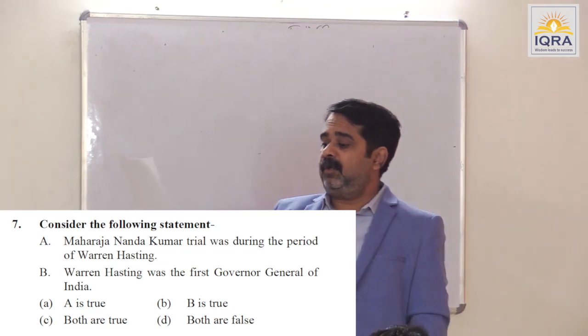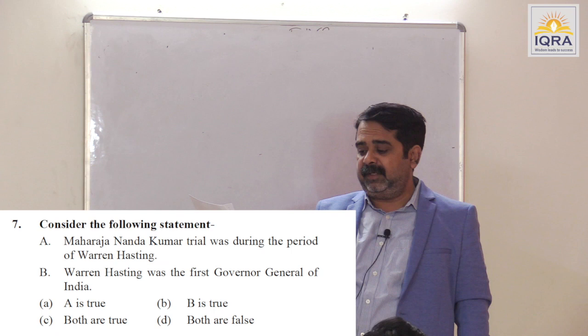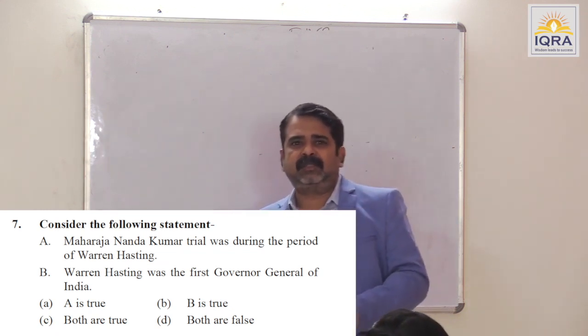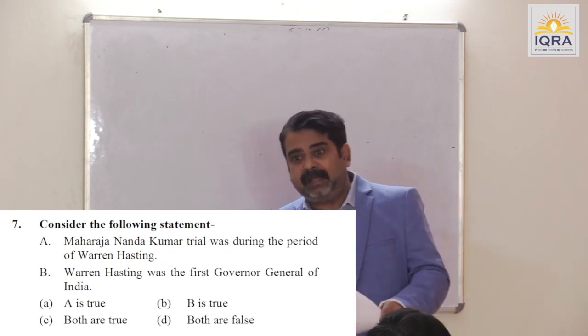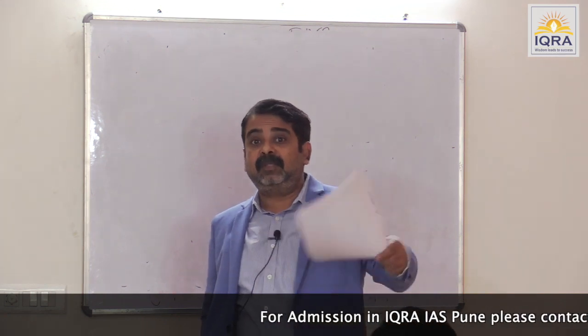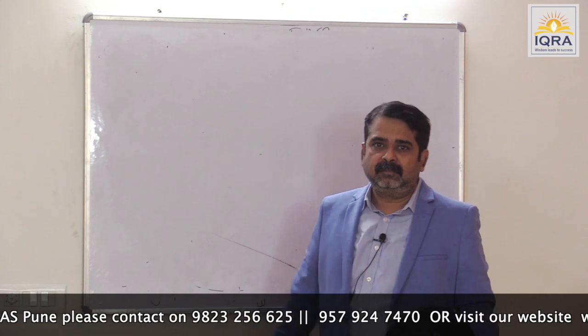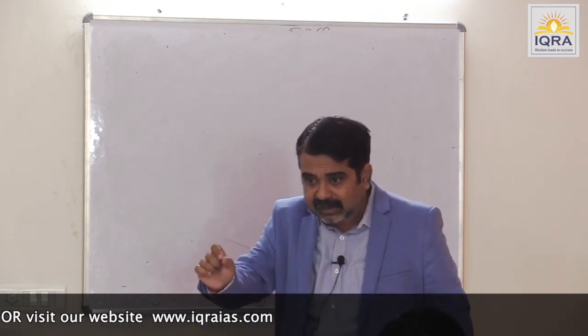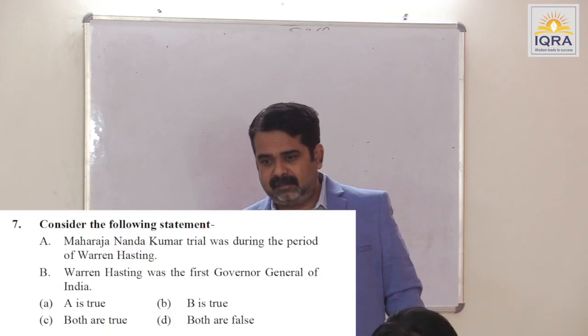Maharaja Nandakumar's trial was during the period of Warren Hastings — yes, true. Warren Hastings was the first Governor General of India — false. Nandakumar went on the side of rivals of Warren Hastings and accused him of bribery, alleging he took 3.5 lakh rupees from Munni Begum and made her son the Nawab of Bengal. Warren Hastings then accused him of forgery. Elijah Impey, Hastings's friend, was Chief Justice of the Supreme Court. Morning the case was filed, evening the trial was done, afternoon/evening hanging — this case is called judicial murder.